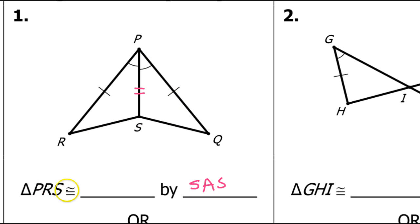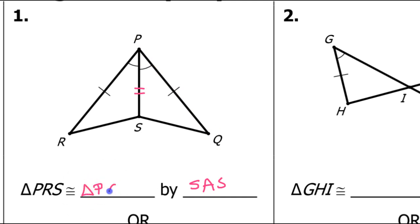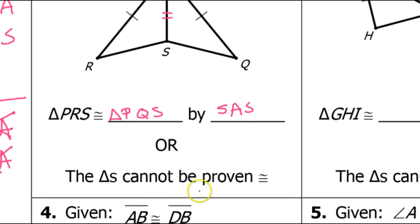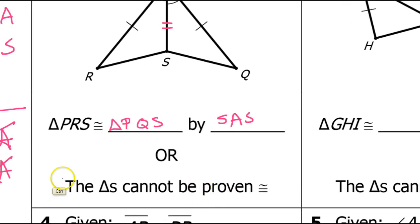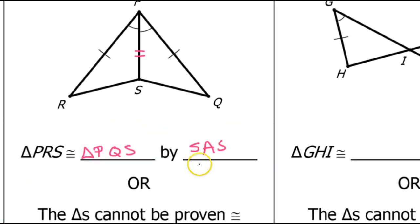We can say that triangle PRS is congruent to triangle PQS. The order matters. Notice if we have two triangles that are not congruent, we will circle this and leave these blank. Do not fill these in if you're circling that triangles cannot be proven congruent.